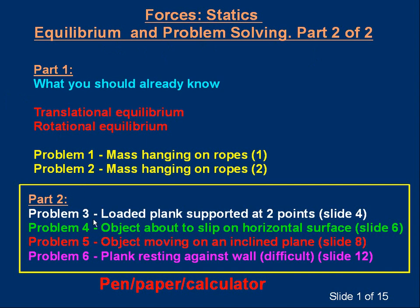Problem three is about a plank carrying a weight and supported at two points. Problem four is about an object on a horizontal surface being pulled and about to start slipping. Problem five is about an object moving along an inclined plane, and problem six is about a plank resting against a wall. If there's a particular type of problem you want help with, you can look at the slide numbers on the right and use the slide numbering on the bottom right of the screen to find the problem you're most interested in.